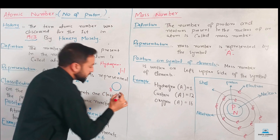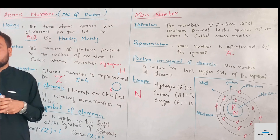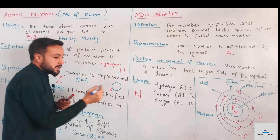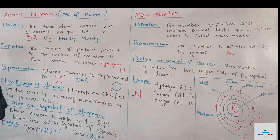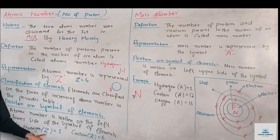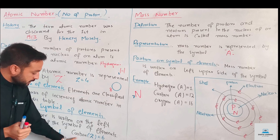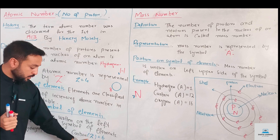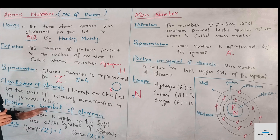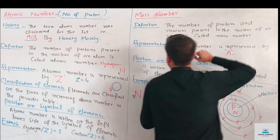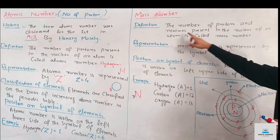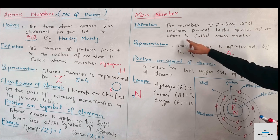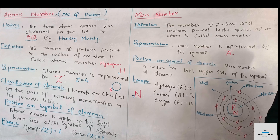For nitrogen, the symbol is N. The atomic number of nitrogen is 7. The next topic is mass number. The number of protons and neutrons present in the nucleus of an atom is called the mass number.